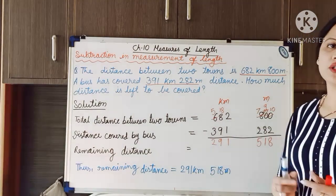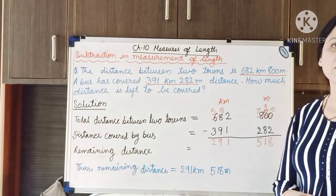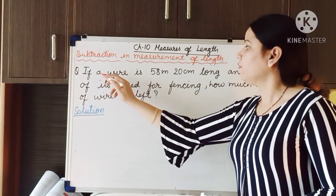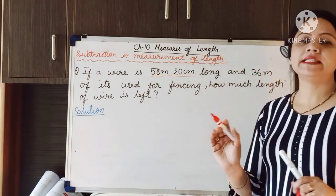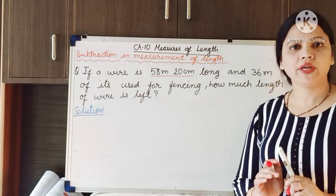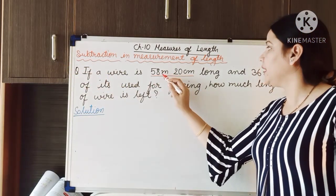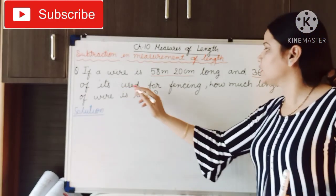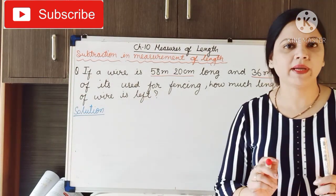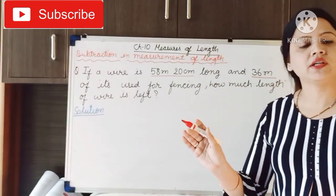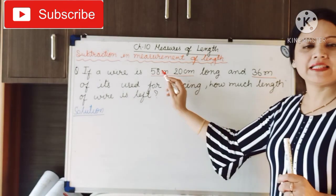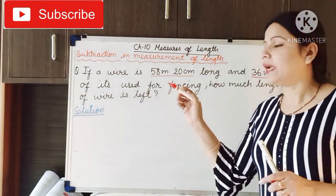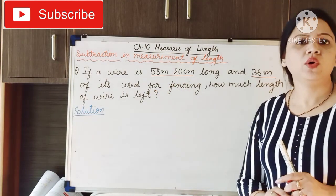I hope this is clear to you. Just pause this video and write this example also in your maths notebook. Here again I have written a statement sum. The question is: a wire is 58 meter and 20 centimeter long. I have a bundle of wire that is 58 meter and 20 centimeter long, and 36 meter of it is used for fencing. How much wire is left in the bundle? That is what we have to find out.